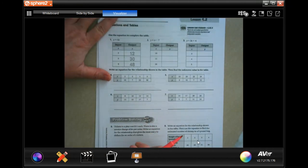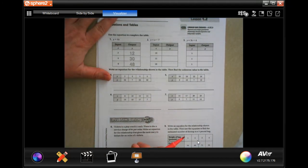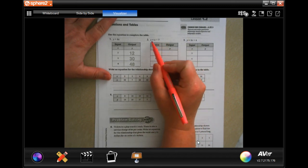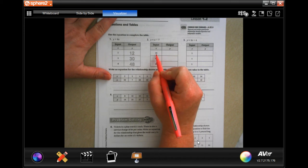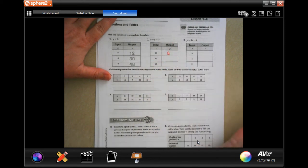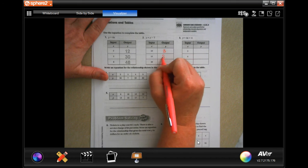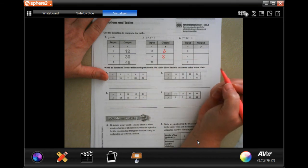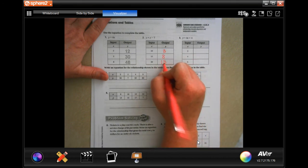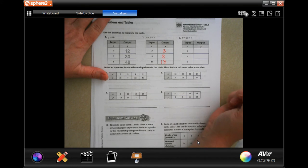This says that y equals x minus seven. Well this has x is 10, so 10 minus 7 is 3, done. 15 minus 7 is 8, done. 20 minus 7 is 13, done.